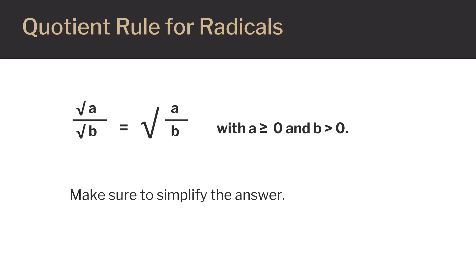We can apply the quotient rule when dividing radicals. It tells us that the square root of a divided by the square root of b is the same as the square root of a divided by b. In other words, if you divide one radical by another, you can move the division under a single radical symbol. Again, when you get your answer, make sure you put it in simplest form.